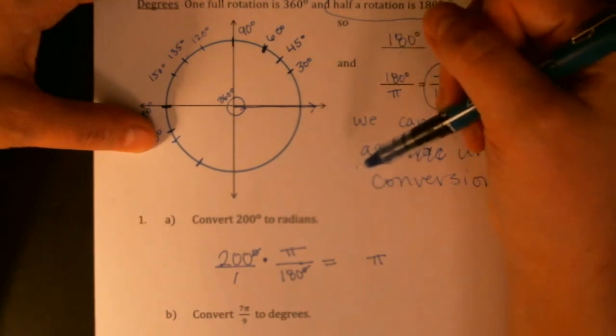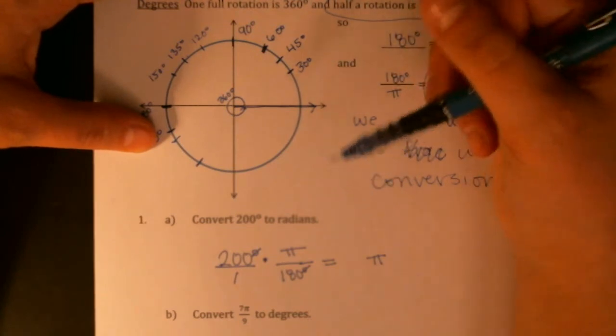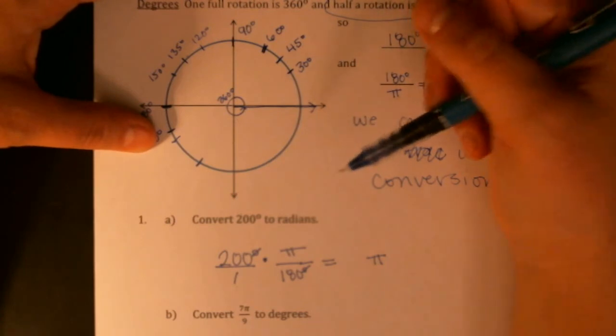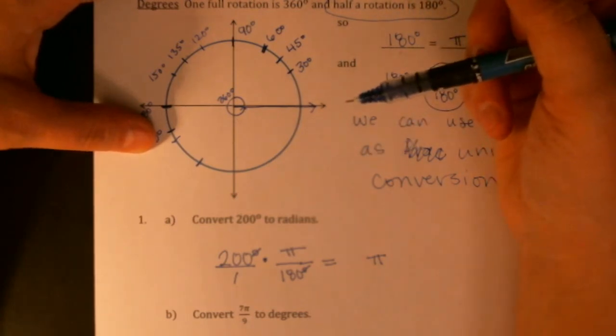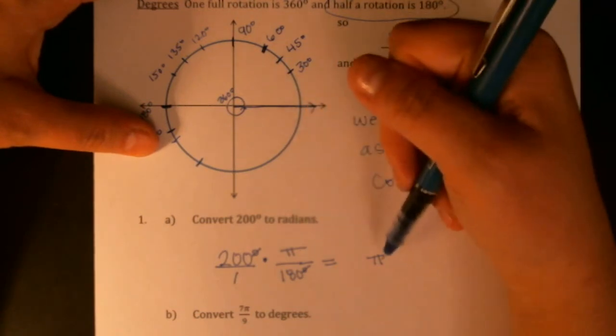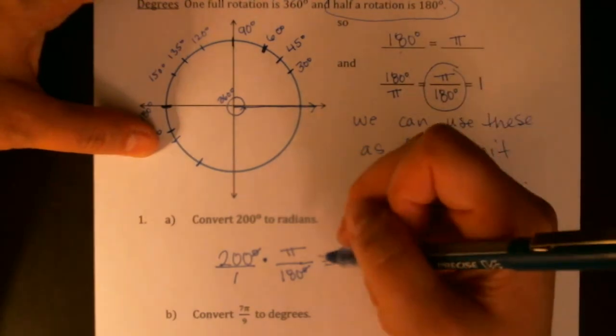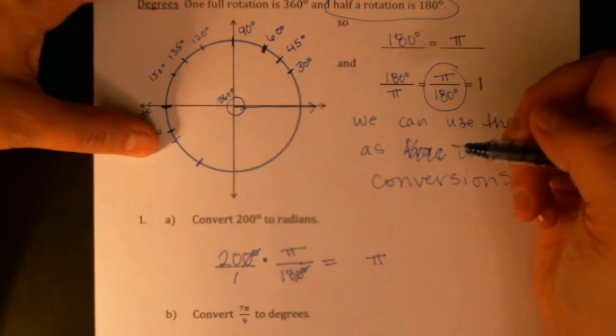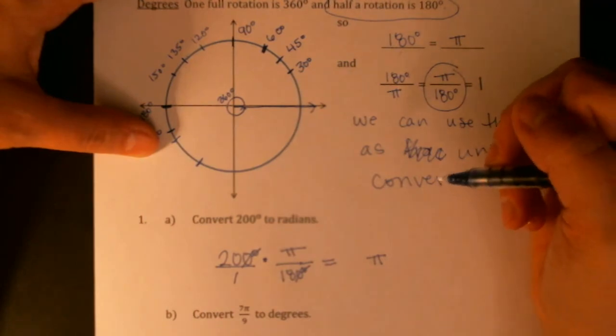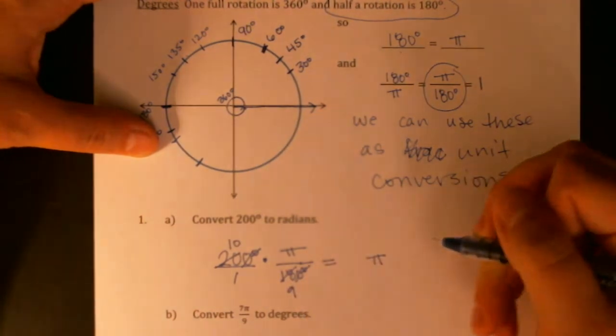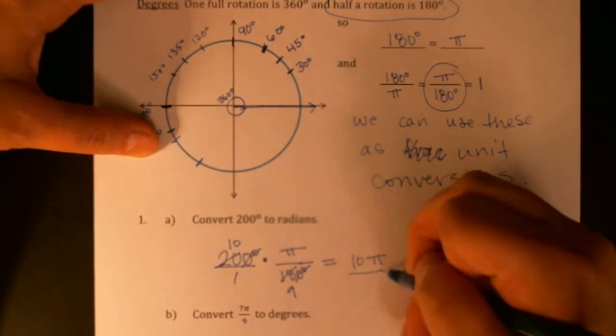Okay, so we have the π just hanging out so that we don't end up with an approximate answer, and then I'm just going to do a little canceling. I can fairly easily divide top and bottom by 10, and then I can also divide top and bottom by 2, which is going to leave me 10π over 9.